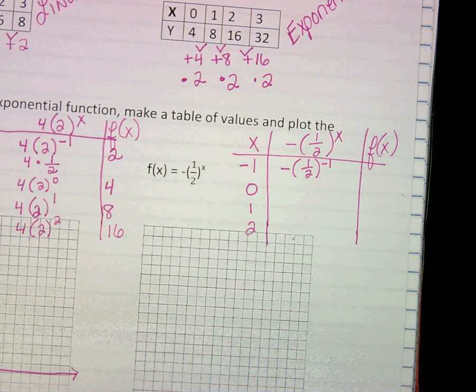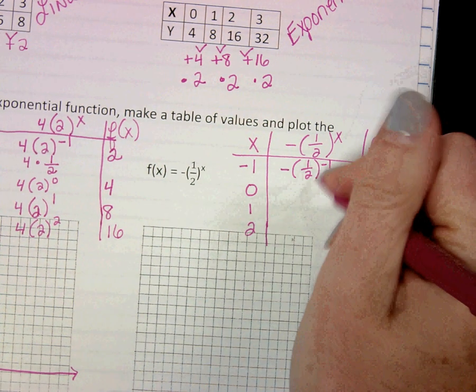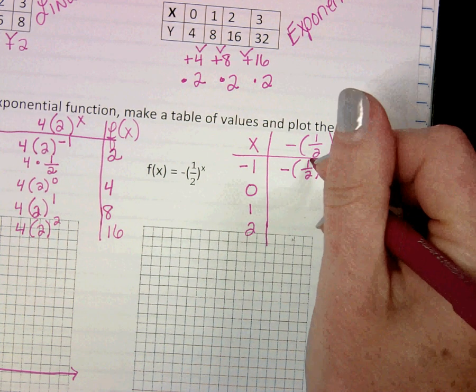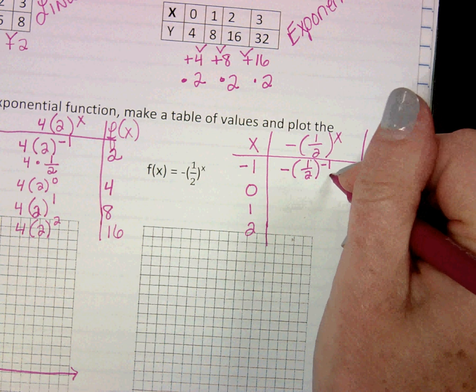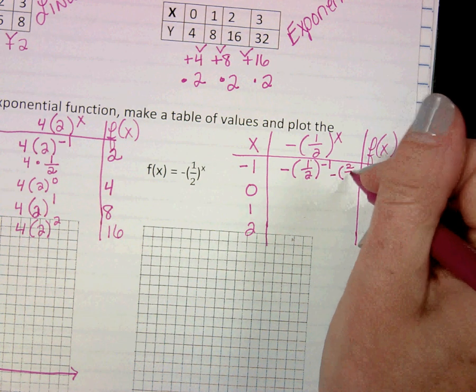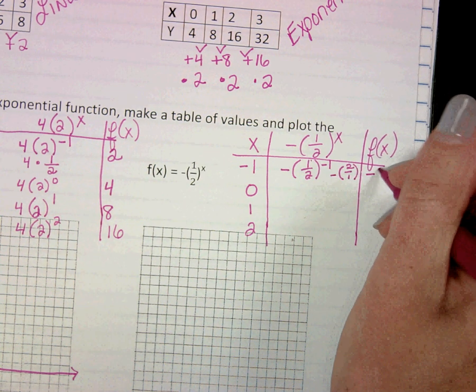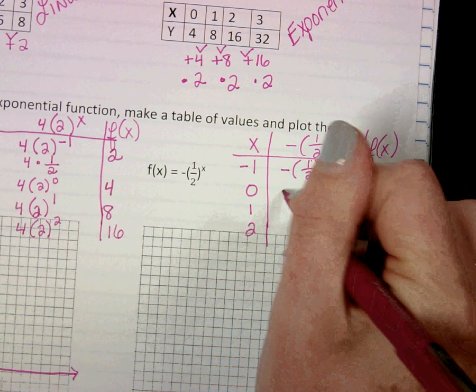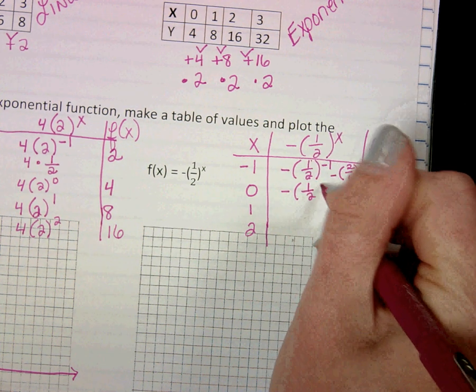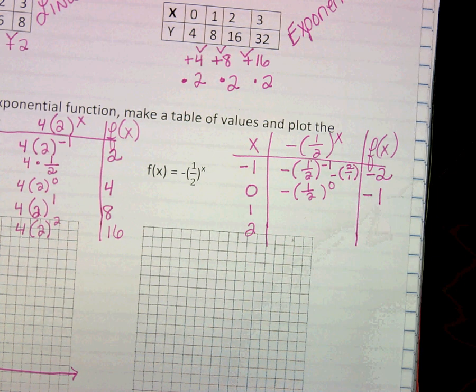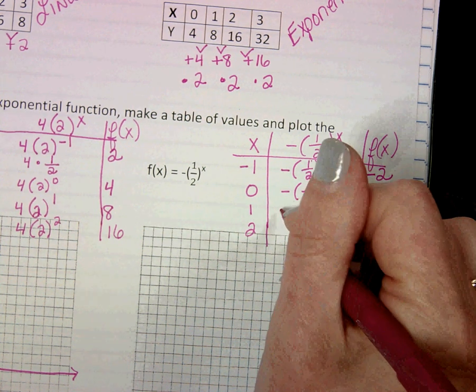When we plug in negative one for x, that's going to make my fraction end up flipping, because both the numerator and the denominator would have a negative exponent. So this would end up being negative two. The next one's pretty easy. That's going to be negative one. Anything to the zero power is one.